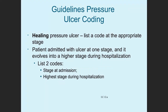Another guideline relates to pressure ulcers that are in the process of healing. The guidelines state you should list a code for the stage the ulcer is at the time the patient is seen. But if a patient is admitted with an ulcer at one stage and it gets worse during the hospital stay, list two codes: one for the stage at admission and another for the highest stage during hospitalization. This is important because if it gets worse while in the hospital, that could indicate some lack of care.